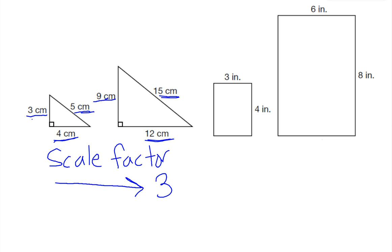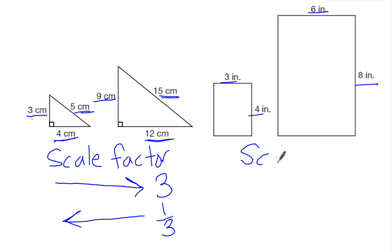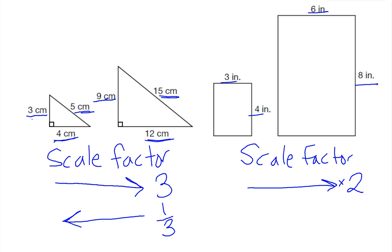Now I can also go the other way — from big to small. And if I go the other way, the scale factor would be 1/3, because it's going to be a fraction. Now for my rectangle, the scale factor to get from 3 to 6, or from 4 to 8, will be 2. So the scale factor going from small to big is 2, and going from big to small is 1/2, so I'm going to divide by 2.